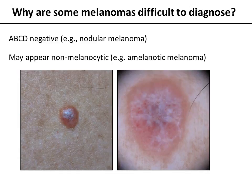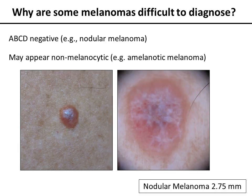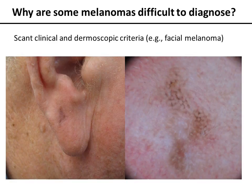Why are some melanomas difficult to diagnose? Some melanomas fail to display the ABCD criteria, sometimes even masquerading as non-melanocytic lesions such as dermatofibroma or pyogenic granuloma. Here's an example of such a melanoma — amelanotic and nodular. Facial melanomas are also often difficult to diagnose, showing very few criteria clinically and dermatoscopically for the classic melanoma.